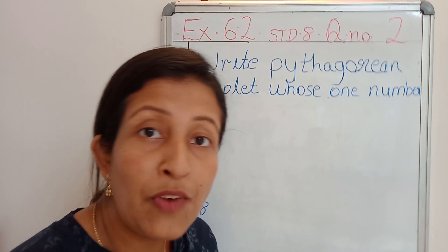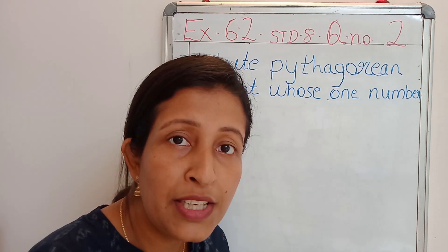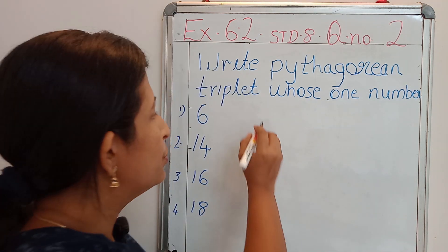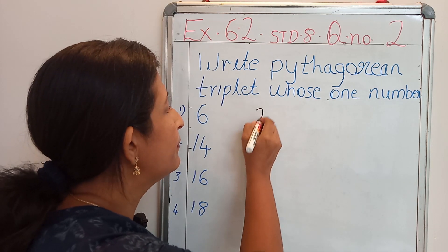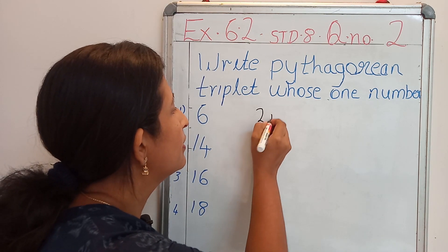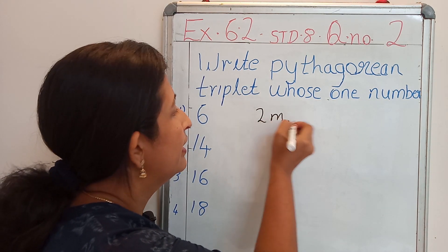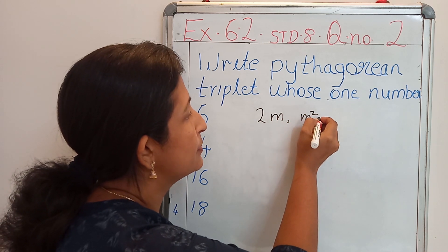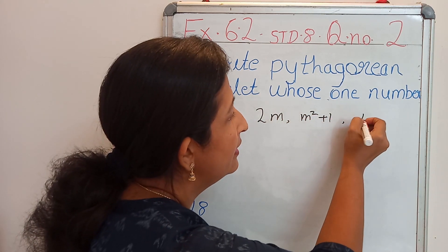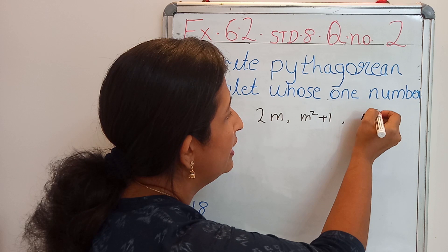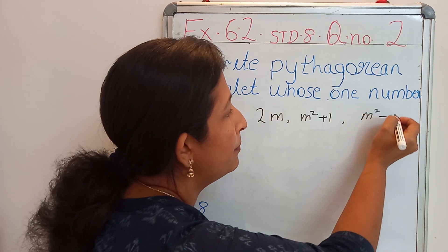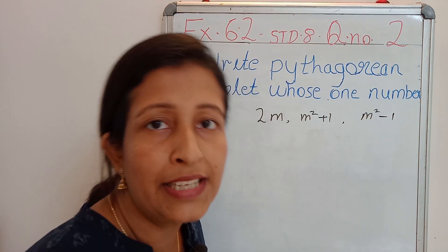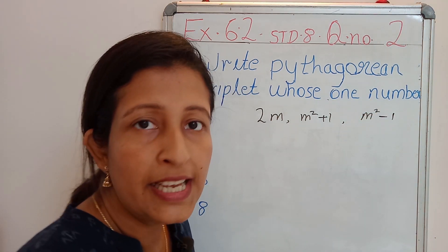Do you remember what are Pythagorean triplets? They are 2m, m square plus 1, and m square minus 1. These are Pythagorean triplets.